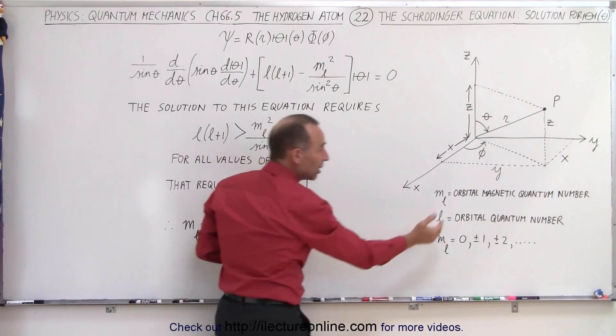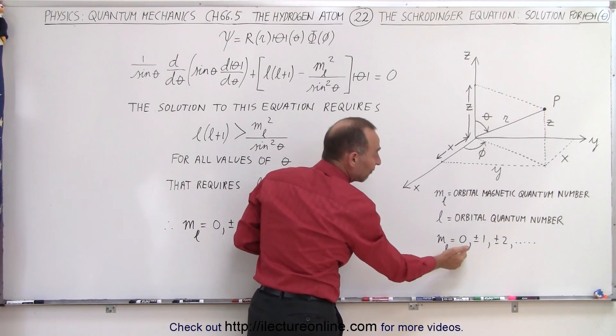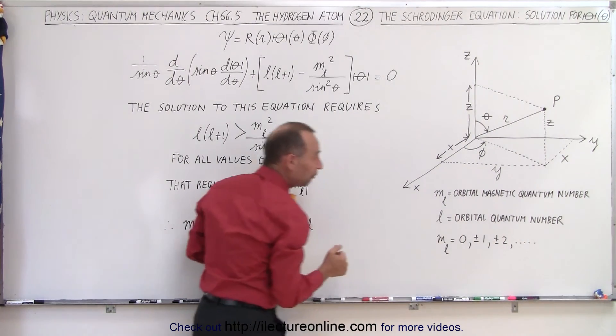And since m sub l, which is the orbital magnetic quantum number, can have values of zero, plus or minus one, plus or minus two, and so forth,